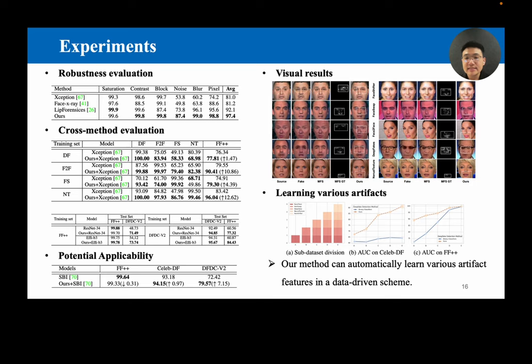We also provided visual results to demonstrate that our model successfully indicated fake images based on local artifact areas. Moreover, our method can successfully capture more generalized artifact features as the types of training forgeries increased. Such a data-driven training scheme helps to release the pressure to continuously devise new methods for the newly proposed types of forgeries, which is of great value for real-life applications.